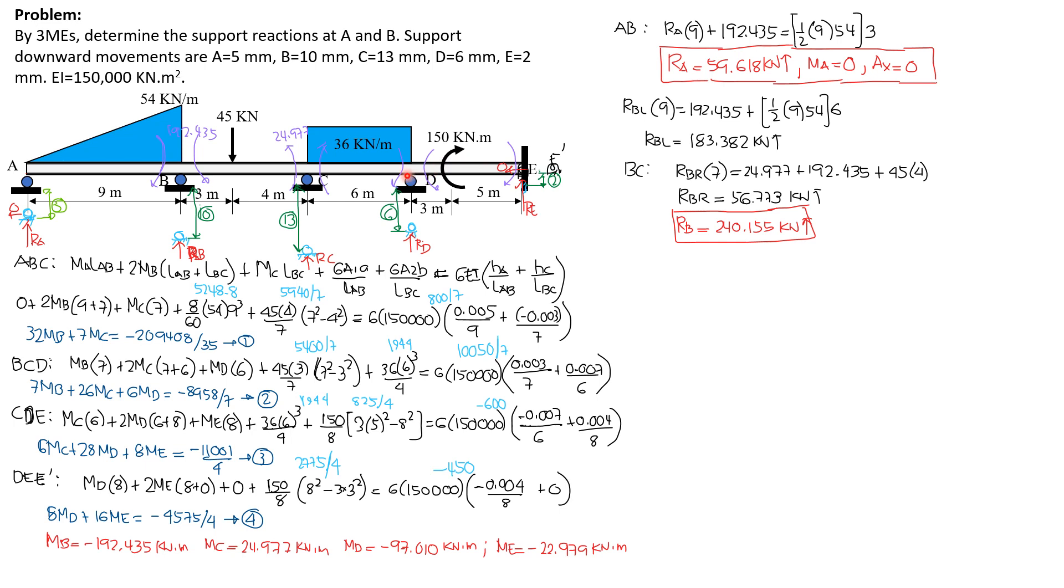Finally, we write 3 moment equations in D, E, E prime. We have moment at D times 8 plus 2 times moment at D, quantity 8 plus length of E, E prime negligible or 0 plus moment at E prime 0 plus 6 area 1A over L1, due to this load, is moment 150 over L, 8, quantity L square minus 3A square, this time. So L square, 8 square minus 3A square, where A is 3 meters.